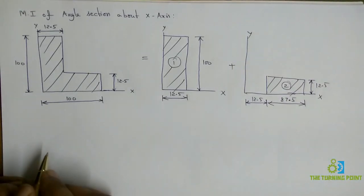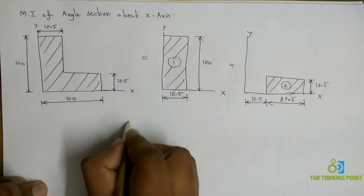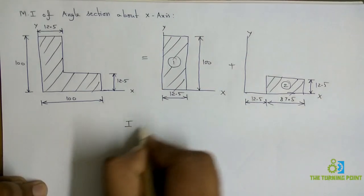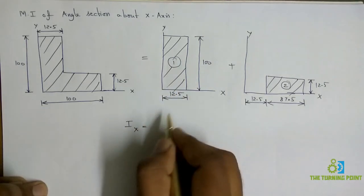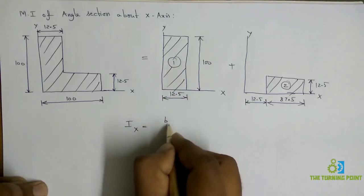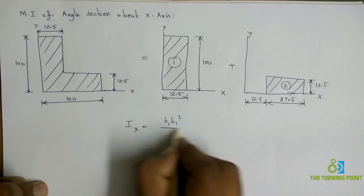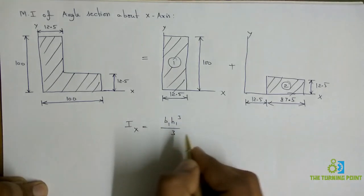If you know the relation for area moment of inertia of rectangle, it is quite easy. Moment of inertia of rectangle about x-axis is BH cube divided by 3. For the first one, I am considering it as B1H1 cube divided by 3,